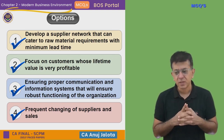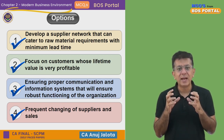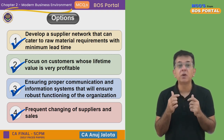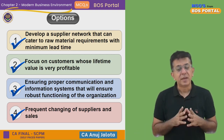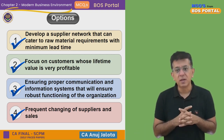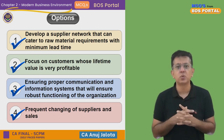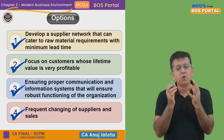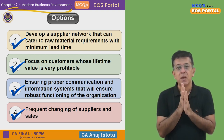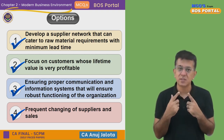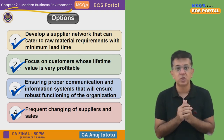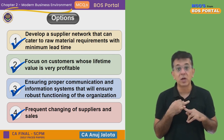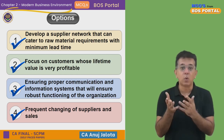Option D: frequent changing of suppliers and sales. Please remember that one of the things that makes supply chains effective is NOT frequent changing of suppliers and sales. If suppliers keep changing, you will not be able to maintain a stable process. You should always try to have the same suppliers — if they are good, obviously. If a supplier has been with you for years, he understands your requirements, knows your lead times, and takes care of the quality you want.